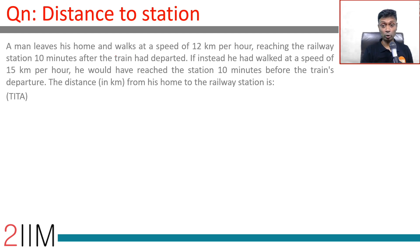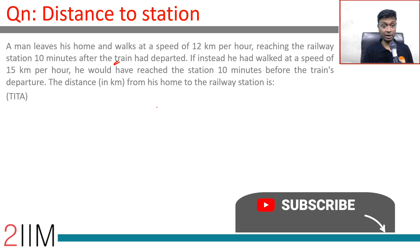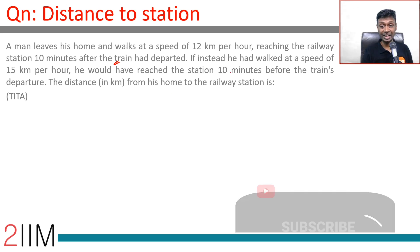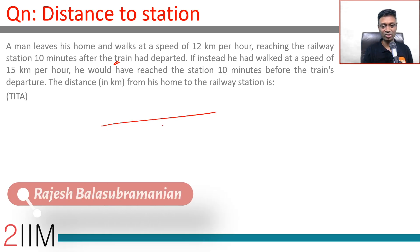A man leaves his home and walks at a speed of 12 kilometers per hour, reaching the railway station 10 minutes after the train had departed. If instead he walked at a speed of 15 kilometers per hour, he would have reached the station 10 minutes before the train's departure. Let's say the distance is d. He can travel at 12 kilometers per hour and 15 kilometers per hour.